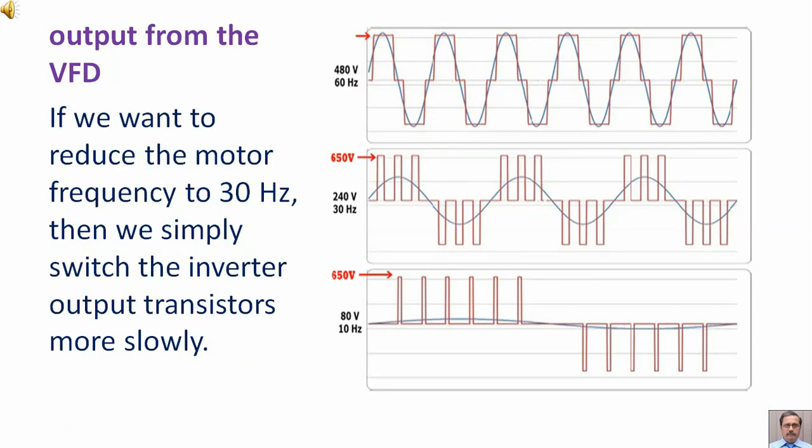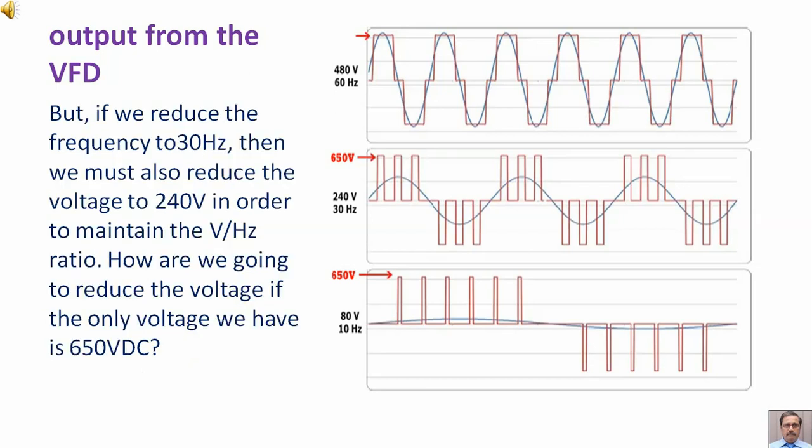If we want to reduce the motor frequency to 30 Hertz, then we simply switch the inverter output transistors more slowly. But if we reduce the frequency to 30 Hertz, then we must also reduce the voltage to 240 volts in order to maintain the voltage to hertz ratio. How are we going to reduce the voltage if the only voltage we have is 650 volts DC?